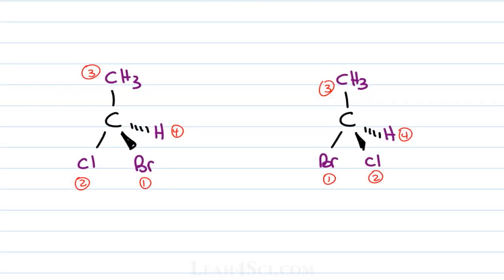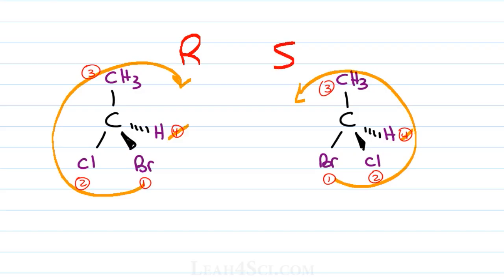In the last video, I showed you the 4-step method for finding R/S configurations. Step 1: prioritize your groups. Step 2: ensure number 4 is in the back. Step 3: cross out number 4. And step 4: trace an arc from 1 to 2 to 3. If the top of your arc is going clockwise or towards the right, you have an R configuration. If the top of your arc is going towards the left or counterclockwise, you have an S configuration.